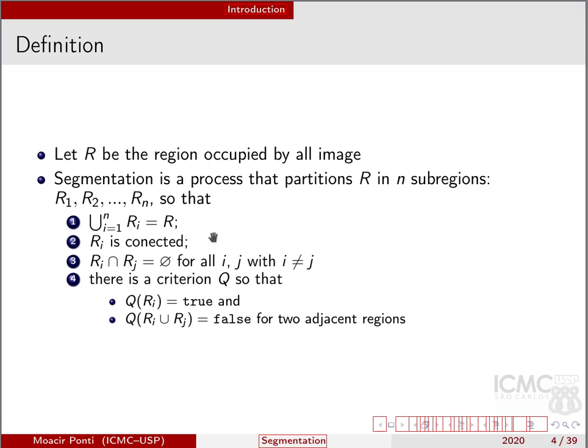Every region that is segmented is connected regarding its pixels. That means that even if I have two regions of the image that belong to the same semantic content, they are connected using at least one pixel that connects them. The intersection between different regions is empty — meaning we don't have a pixel that would belong to two regions at the same time.